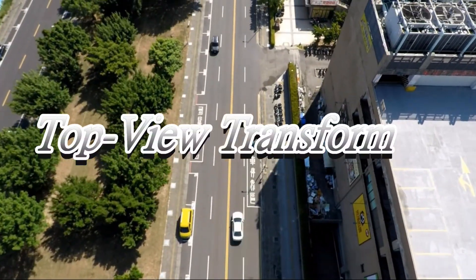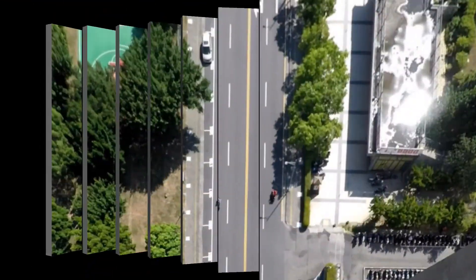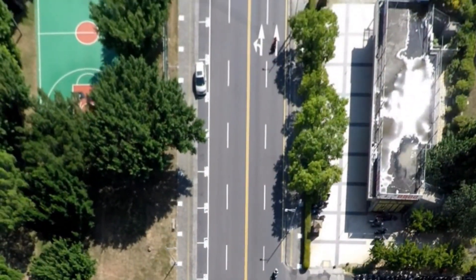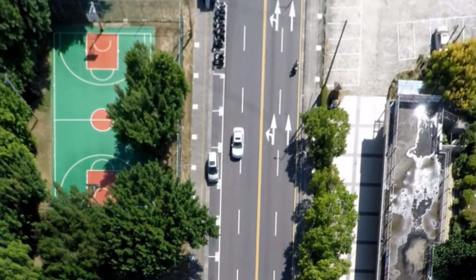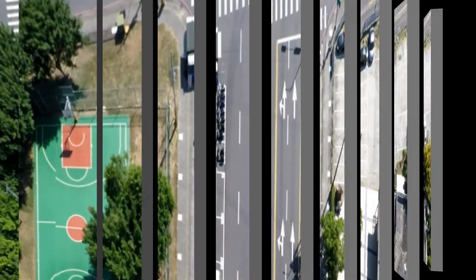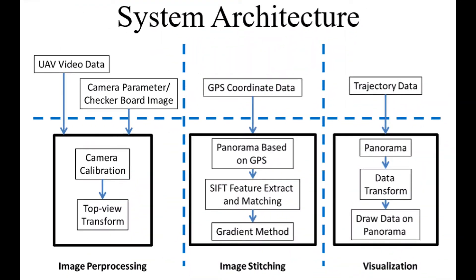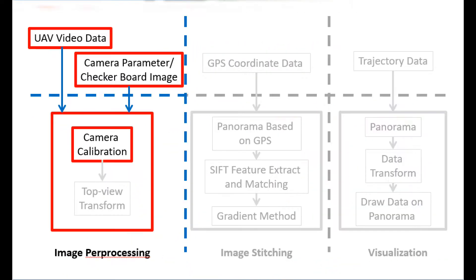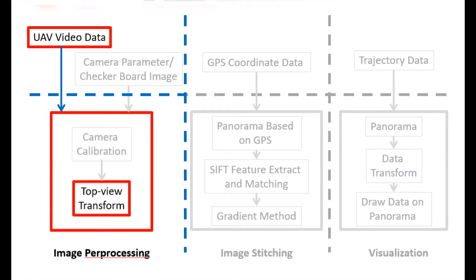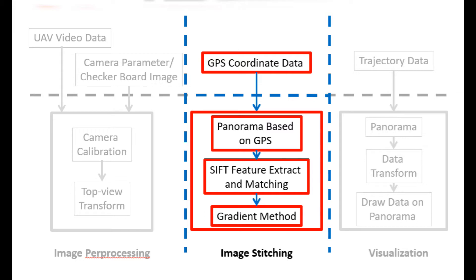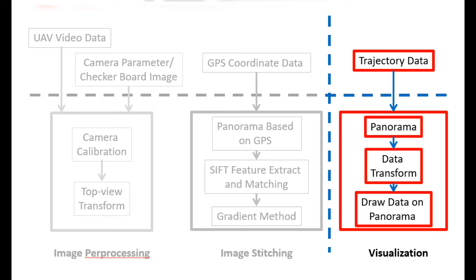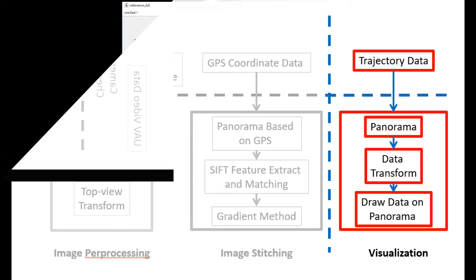In our research, we hope to provide a reference for objects in the video based on distance-preserving image stitching with the help of image processing techniques. First, we have to pre-process the collected video. This includes lens distortion removal and top view transform. Then, image stitching is applied to the processed image. To validate the relevant techniques and present results, we've made several visualization tools, which we'll introduce later in this video.